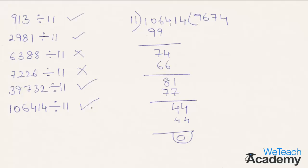So hence we can conclude: to check whether a number is exactly divisible by 11, subtract the last digit from the remaining number. If the result is divisible by 11, then the original number is also divisible by 11. Hope you like the presentation. Do like and subscribe to videocheckacademy.com. Thanks for watching, have a nice day.